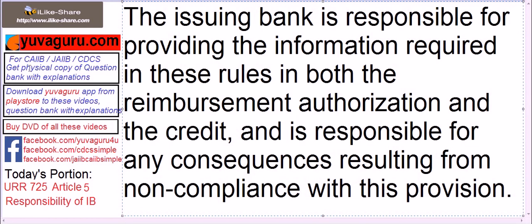You can download the URGuru app from the Play Store to get these videos and question banks with explanations directly on your mobile. You can also get the physical copy of the question bank with explanations from this website, which contains in-basket questions as well as simulation exercises. You can get the DVDs of all these videos from this website — they are segregated chapter-wise. You can follow us on these three links.